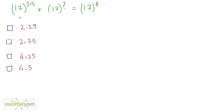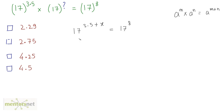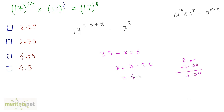Let us move on to the next question. Using the formula a raised to m times a raised to n equals a raised to m plus n, we can write the left-hand side as 17 raised to 3.5 plus x, equal to 17 raised to 8. Since the bases are the same, 3.5 plus x equals 8, therefore x equals 8 minus 3.5, which is 4.5. That was very easy.